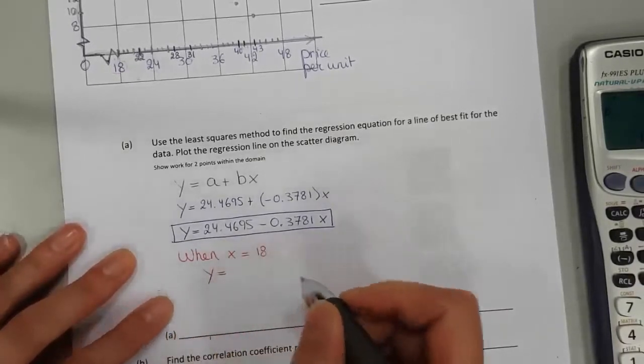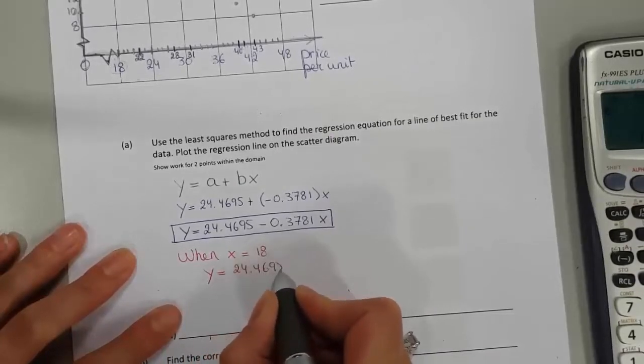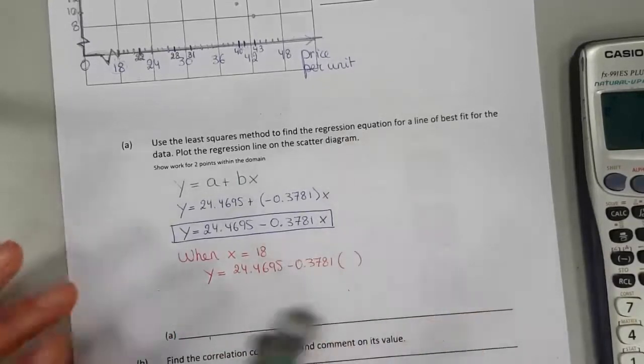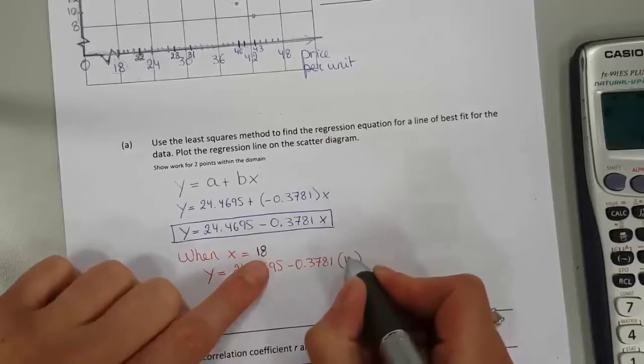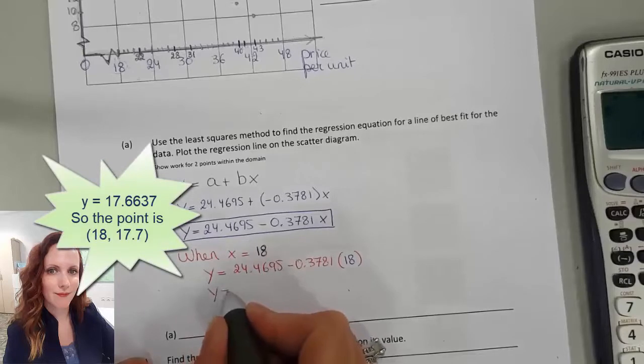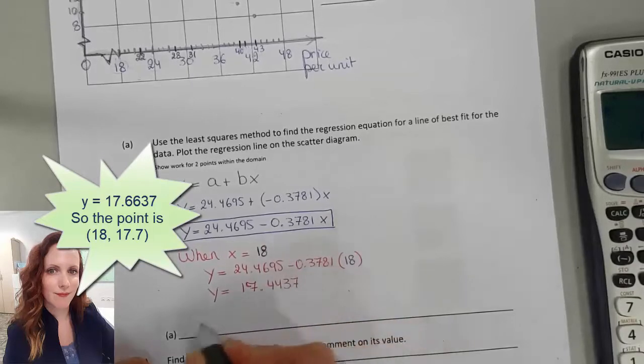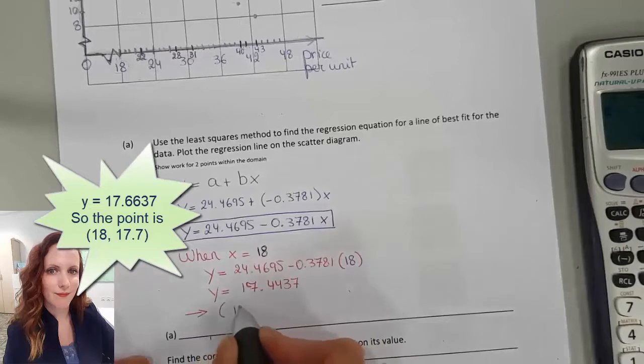When x is 18, let's solve for y. y is 24.4695 minus 0.3781 times x. I want to fill out 18. Let's calculate this. You should get y equals 17.4437. So now I know a point. The point is 18 and 17.4.